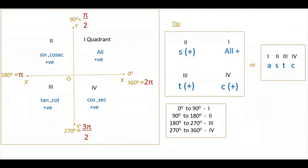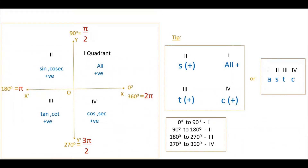Now let's look at the signs of all trigonometric functions in each quadrant. In the first quadrant, all trig functions are positive. In the second quadrant, only sine and cosecant are positive; the rest are negative. In the third quadrant, only tan and cot are positive. In the fourth quadrant, only cos and secant are positive; the remaining all are negative.